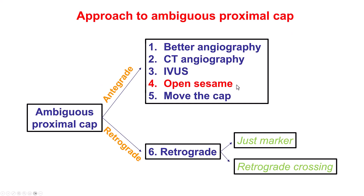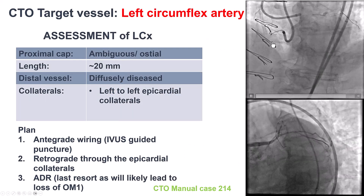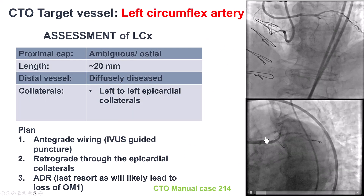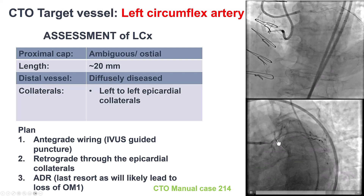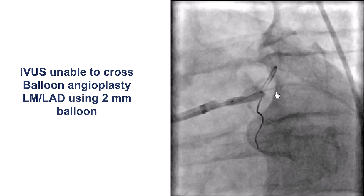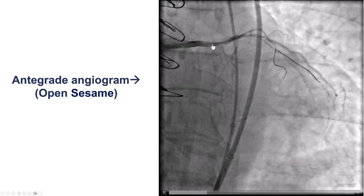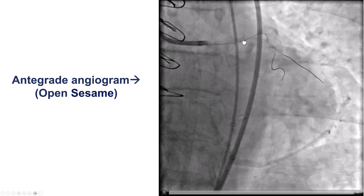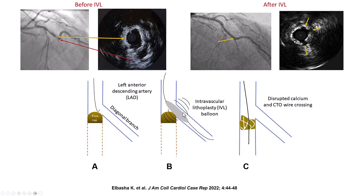The fourth technique is called the open sesame technique. This is an easy technique that also requires a side branch close to the proximal cap. Here we have a circumflex CTO — it's an ostial circumflex CTO — and it's hard to know exactly where the CTO originates. So what we did is take a balloon and inflate it between the left main and the LAD, and after doing that, there was actually some flow going into the circumflex. Open sesame is inflating a balloon between the proximal vessel and the side branch, which helps potentially open a channel along the course of the CTO vessel. This can also be done for heavily calcified lesions using intravascular lithotripsy.